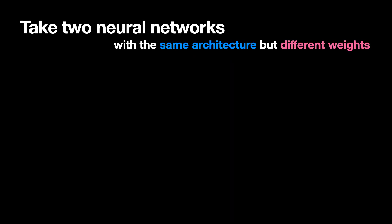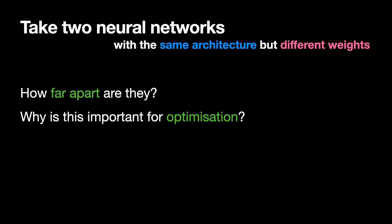Take two neural networks with the same architecture but different weights. How far apart are they? Why is this important for optimization? And can we design a better learning rule based on this?